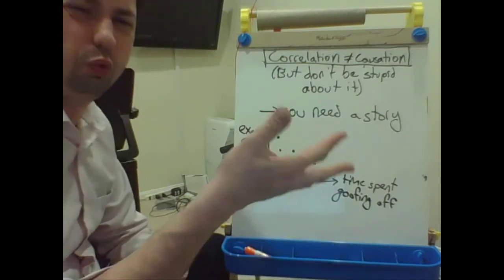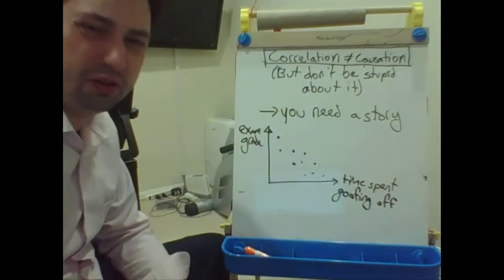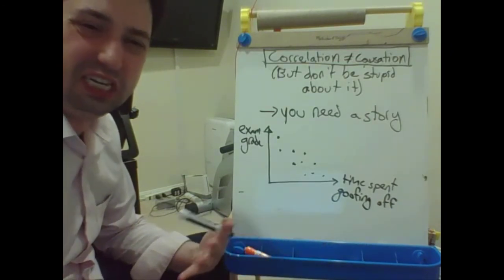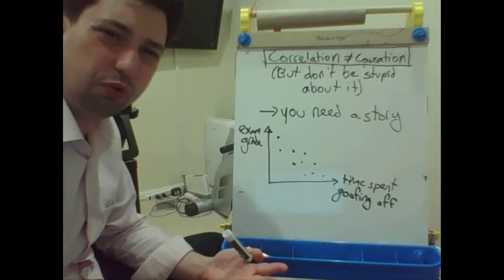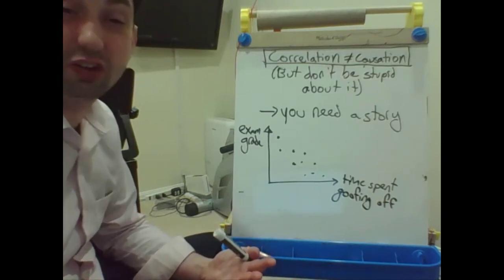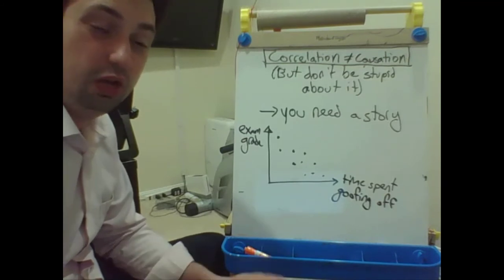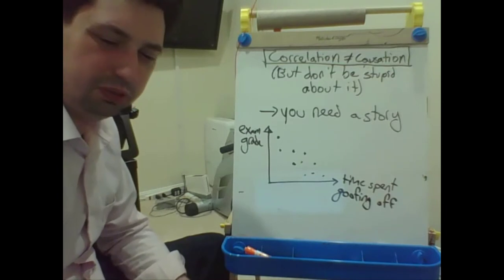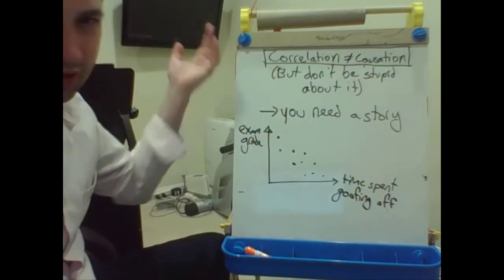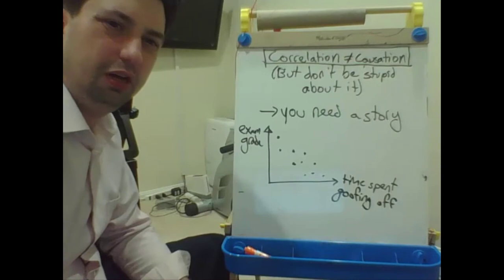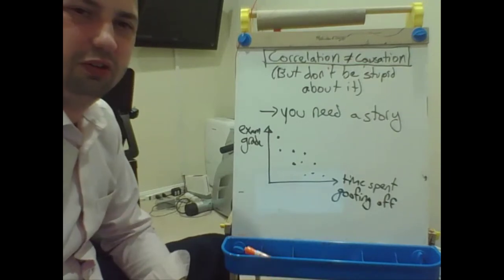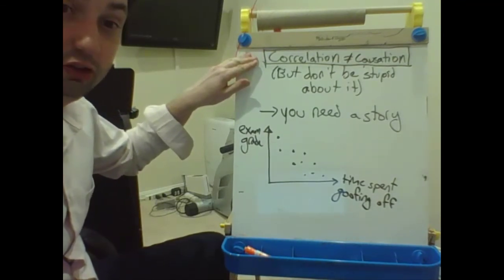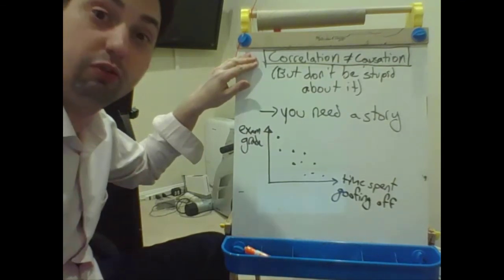You need a reason for why one thing would cause another. The idea that correlation does not mean causation is something that's covered in every introductory statistics class. You need a narrative — a reason why one thing would cause another. If you don't see an inherent connection, that's probably a weird coincidence. But clearly, some correlations do make sense and should not be dismissed.